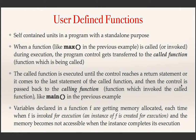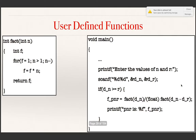Variables declared in a function f are getting memory allocated each time when f is invoked for execution. An instance of f is created for execution and the memory becomes not accessible when the instance completes its execution. The details of how exactly an instance of a function is created are not in the scope of our course. Let us look at another example where we have a user defined function fact.